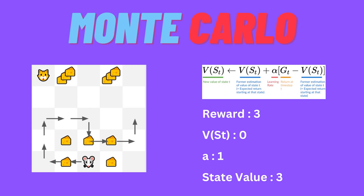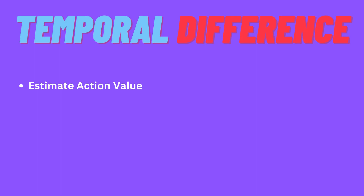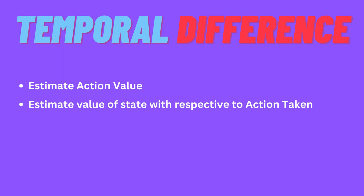Next, Temporal Difference Learning. Temporal Difference Learning typically works with an action value estimate. The general idea in TD Learning is different from Monte Carlo — in Monte Carlo, you need a complete trajectory to update the state. In TD Learning, we update state values online, step by step.